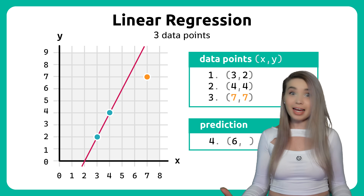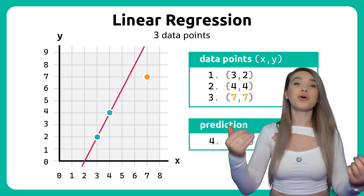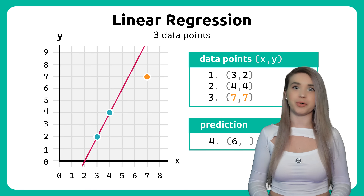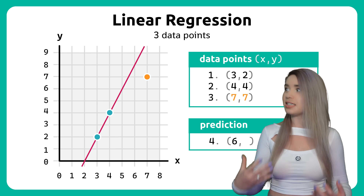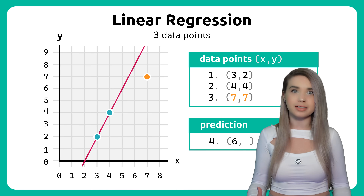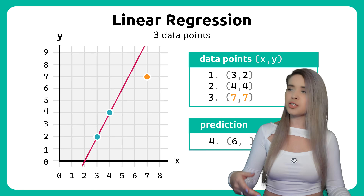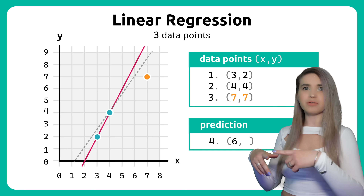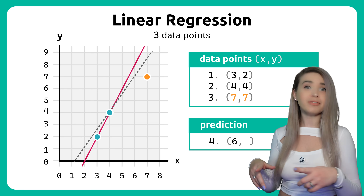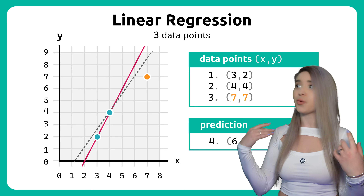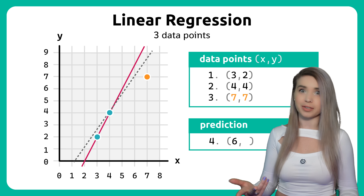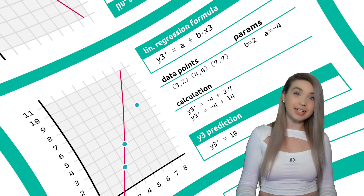And in that case, our third data point doesn't even align with the other two. So let's try moving our perfect line towards the third point.